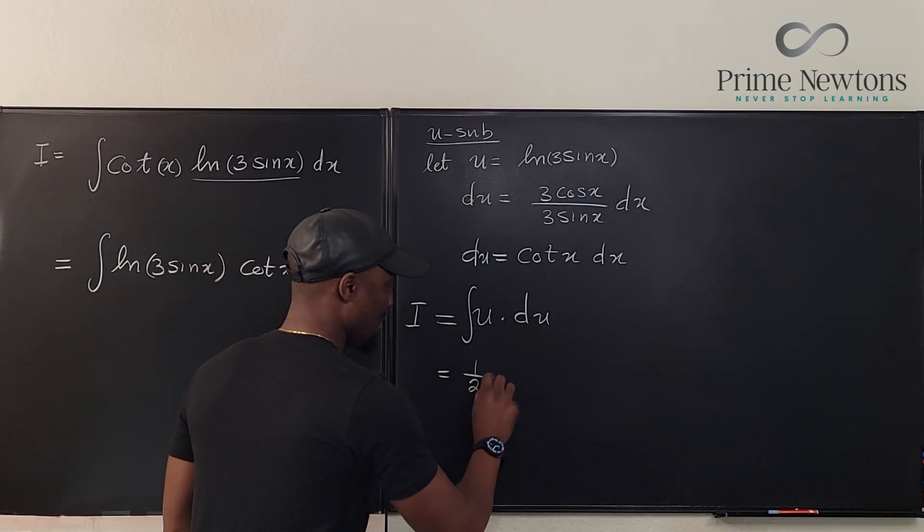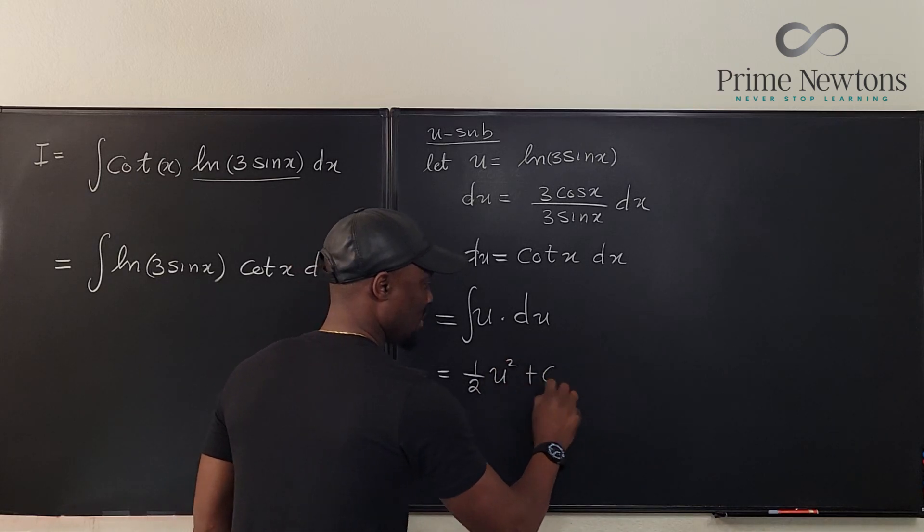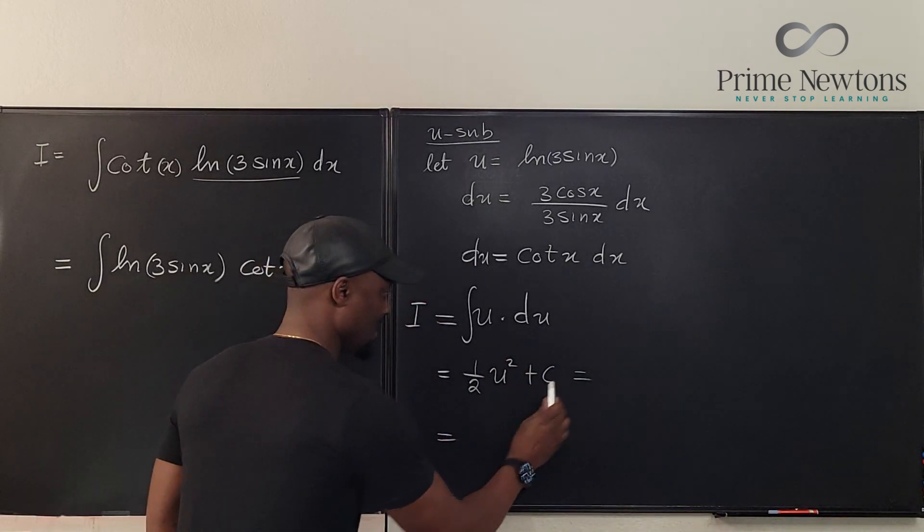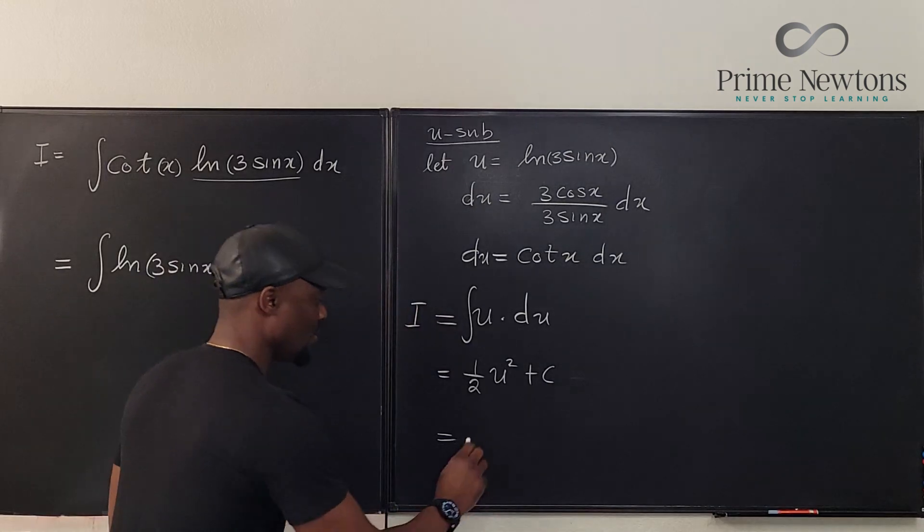When we integrate this, what do we get? We get half u squared plus c, which when translated will be equal to one half...